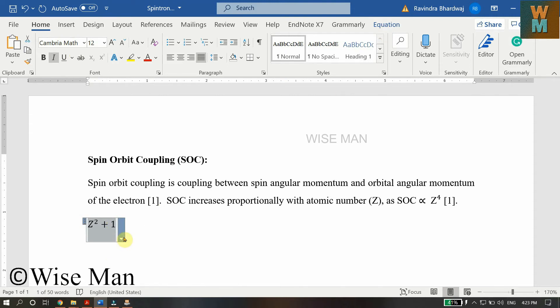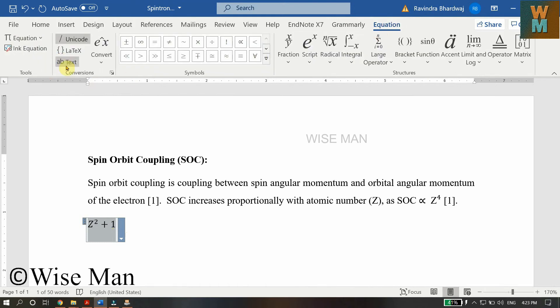Then if you have entered the equation, you can see this Equation tab on the top. Click on that, then click on this text option. As you can see, if you scroll the mouse button over there, it says use non-math text in a math region. Click on that.